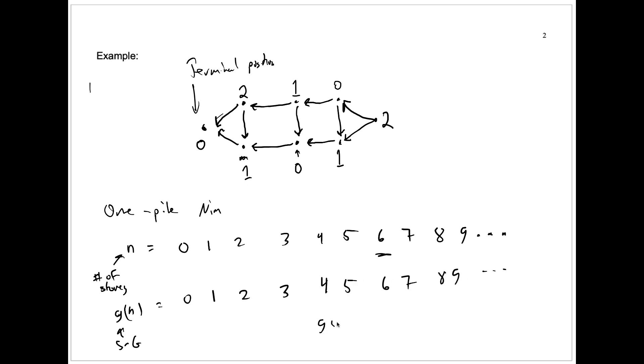In other words, g of n is equal to n for all n. Very simple there. Now, you might ask, what does the Sprague-Grundy function tell us?